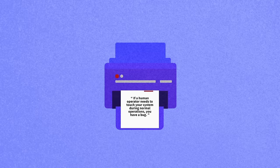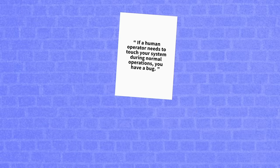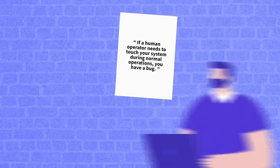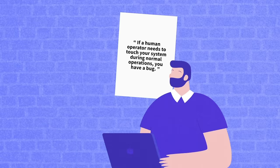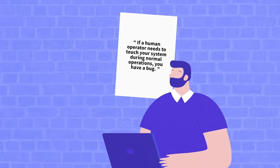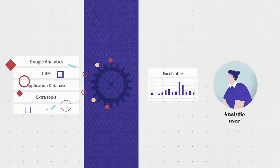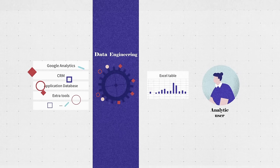There's a good quote by Carla Geiser from Google: 'If a human operator needs to touch your system during normal operations, you have a bug.' So before the guy burns out, the team decides to automate things. First they print the quote and stick it on the wall. Then they ask a software engineer for help. And this is the point that data engineering begins.